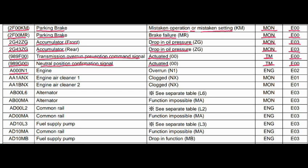Code 8000091. Where is the problem? Engine. What is the problem? Overrun. Engine control system is related to this fault, and the action code is E02.